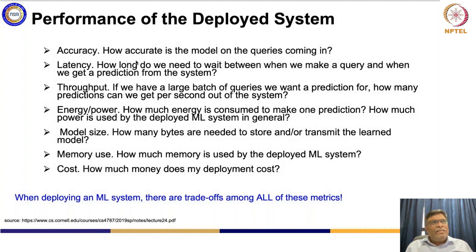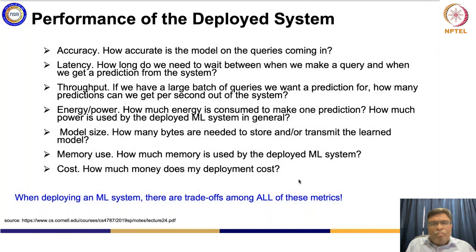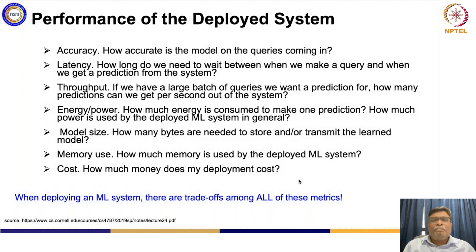The basic idea is that when deploying this type of system, there are trade-offs among all of these metrics. You will have to keep all of this in mind when you try to deploy a system. This explains why we are concentrating on this aspect of doing inferencing on a system where a model needs to be deployed on a smaller system.